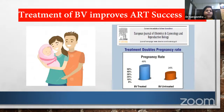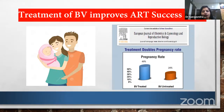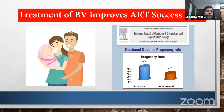Treatment of bacterial vaginosis should proceed before going for ART, as it improves ART success rate. Treatment doubles the pregnancy rate: untreated is almost 24%, while treated reaches almost 49% success rate.